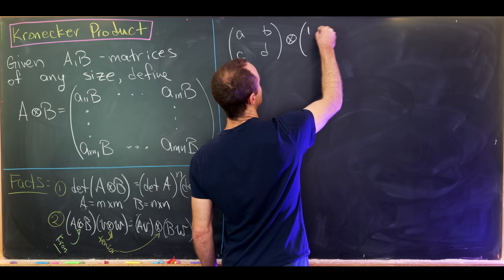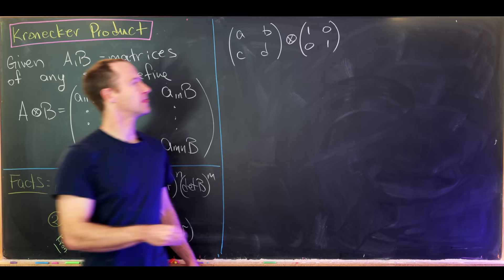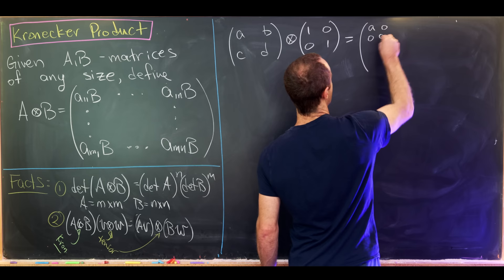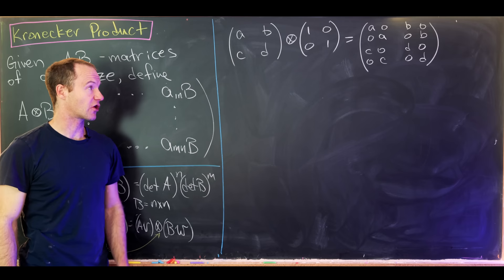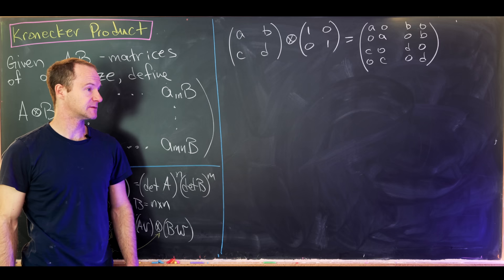Based on our earlier example, that Kronecker product equals the block matrix with blocks: top-left [a·I] = [[a,0],[0,a]], top-right [[b,0],[0,b]], bottom-left [[c,0],[0,c]], bottom-right [[d,0],[0,d]]. Now we'd like to find the determinant. We can perform row and column operations, carefully tracking changes to the determinant, to simplify the matrix.